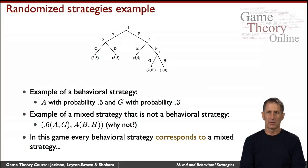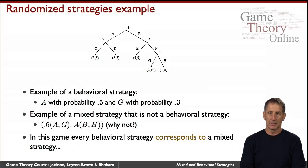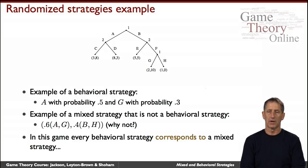The equilibria in mixed strategies are outcome equivalent to the equilibria in behavioral strategies. In fact, it's not true only for games of perfect information — it's true for games of imperfect information as well, that is, games with information sets where agents don't have full knowledge of where they are, so long as those games have what's called perfect recall.